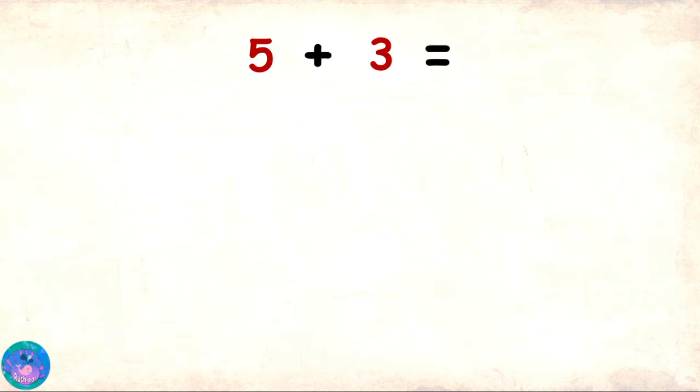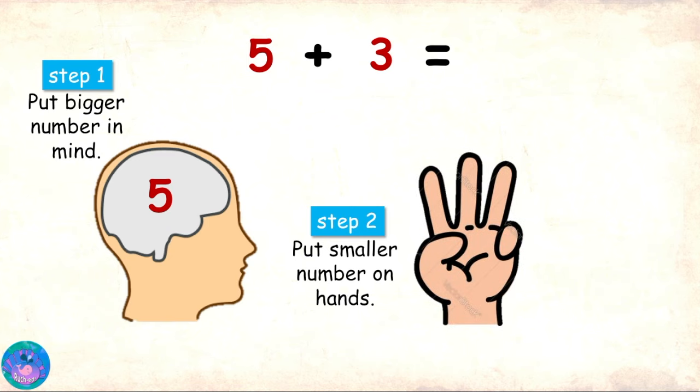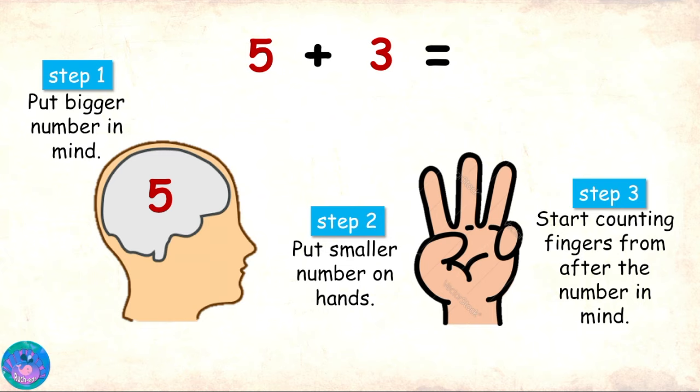Step 1 is to put the bigger number in your mind. Since 5 is the bigger number, that goes in our mind. Step 2 is to put the smaller number on hands, which we do by raising that many fingers. Since our smaller number is 3, we will raise 3 fingers.